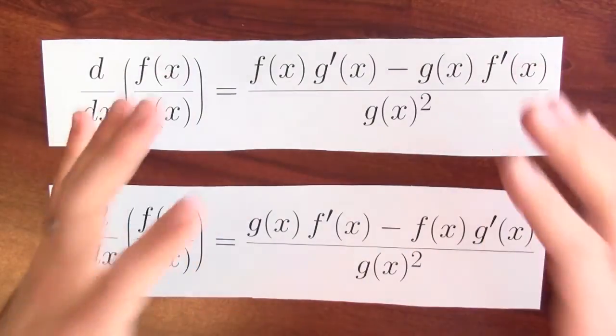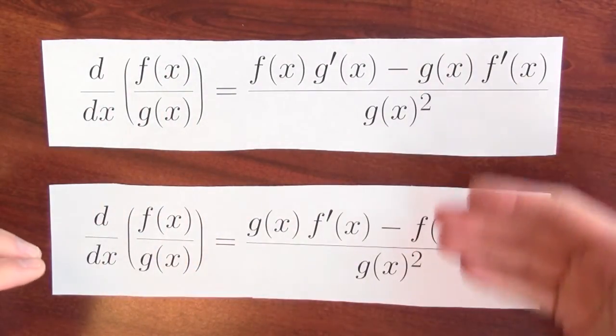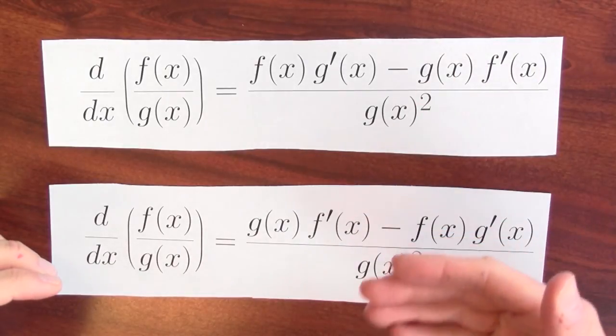You're lost. You're trapped on a desert island. You have to remember the quotient rule. How can you remember the quotient rule? Even while trapped on that desert island, you'll remember the vague form of the quotient rule.